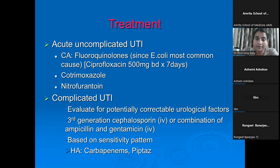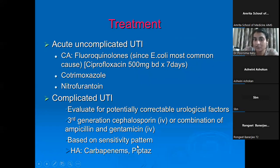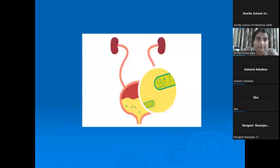Coming to treatment: if it is community-acquired UTI, empirical fluoroquinolones can be initiated, or cotrimoxazole or nitrofurantoin. In the case of complicated UTI, third-generation cephalosporins are needed, which should be escalated or de-escalated based on the sensitivity pattern. If it is hospital-acquired UTI or CAUTI, carbapenems or piperacillin-tazobactam has to be initiated.